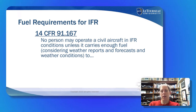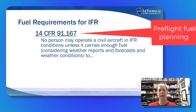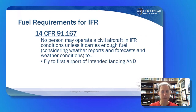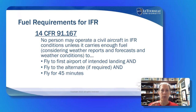In 91-167 we find the fuel requirements. When we think about whether we need an alternate, it's largely based on fuel requirements. This is all pre-flight planning. We need enough fuel to fly to our intended destination, then to fly to the alternate if we need one, and then fly for 45 minutes after that. So we have three buckets of fuel: going to the destination, going to the alternate if needed, and then 45 minutes.